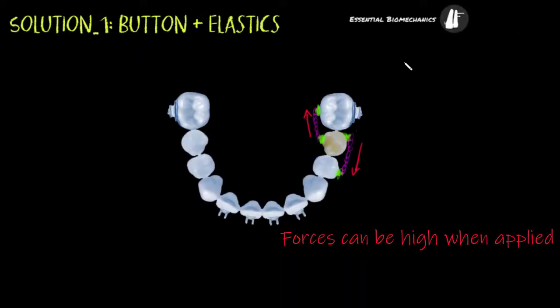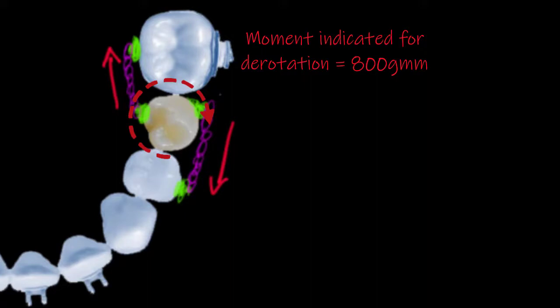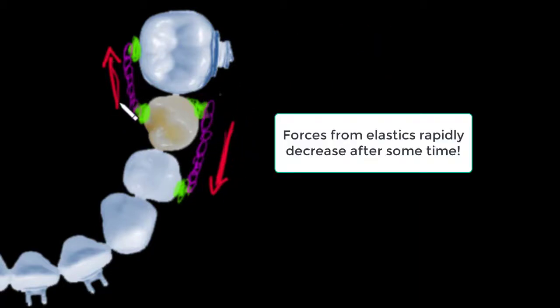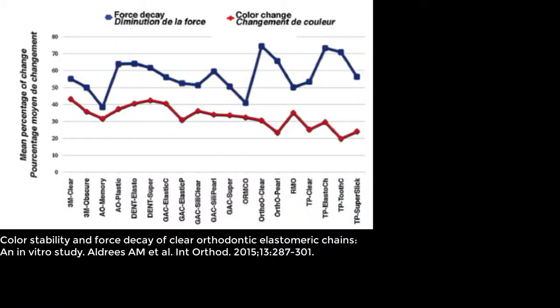With this approach, the force could be very high when applied. Let's consider a moment of 800 grams millimeters to derotate a premolar. Considering that the distance between the force is very short, the forces must be kept high in order to keep an appropriate moment.